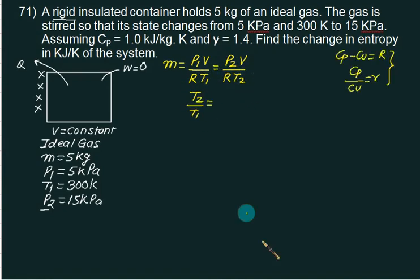So we have T2 by T1. T2 by T1 equals P2 by P1. We know this ratio because P2 is 15 and P1 is 5. So this ratio is 3, and therefore we can calculate T2 if required. Now we go back to our original equation.